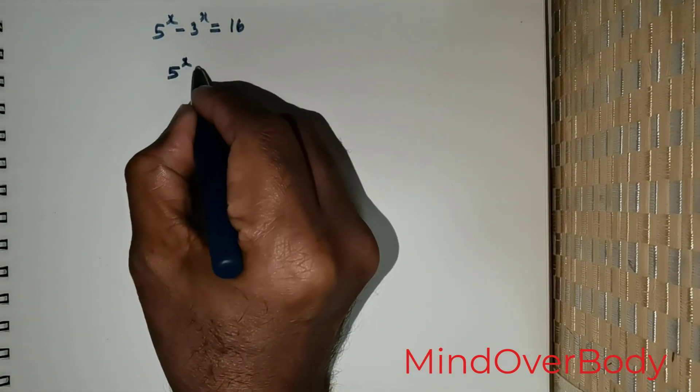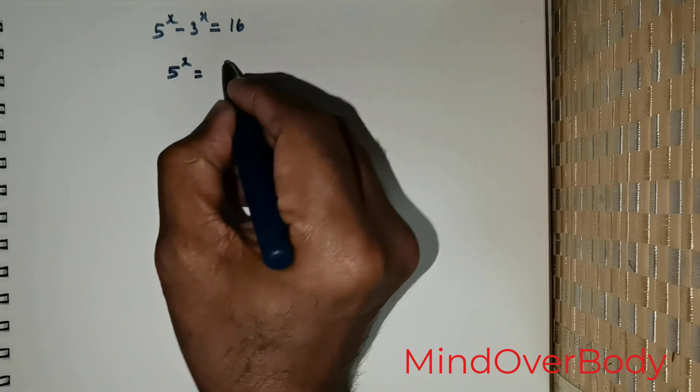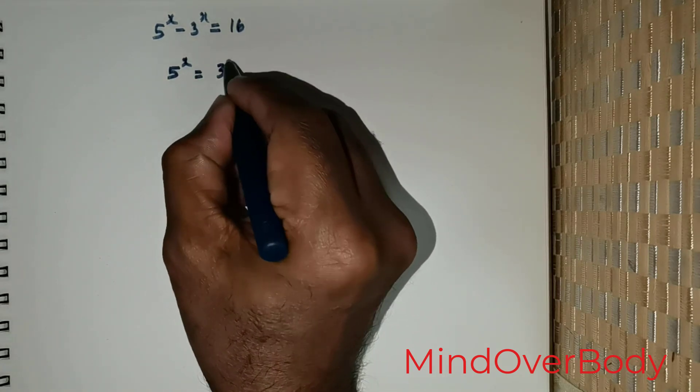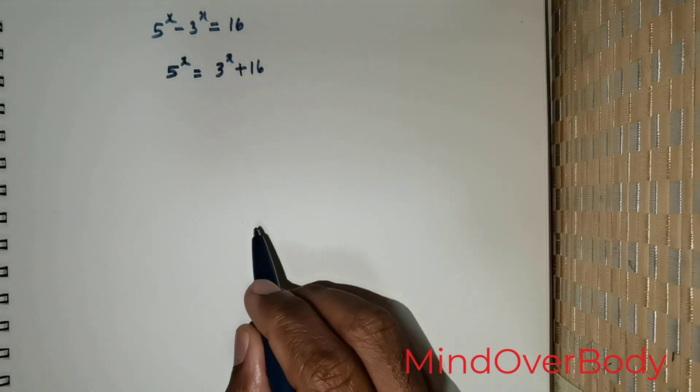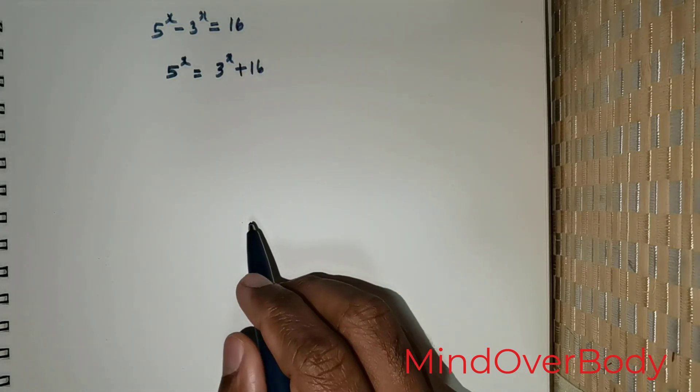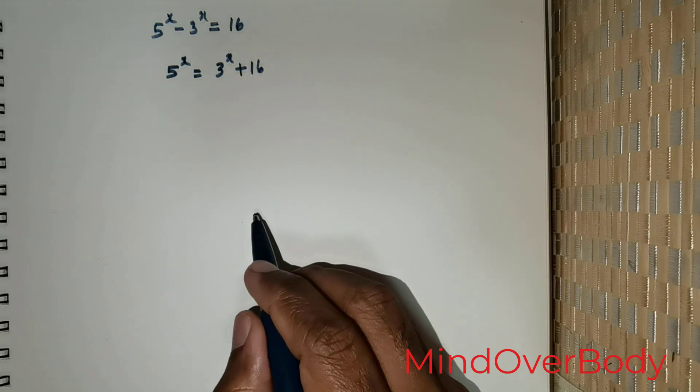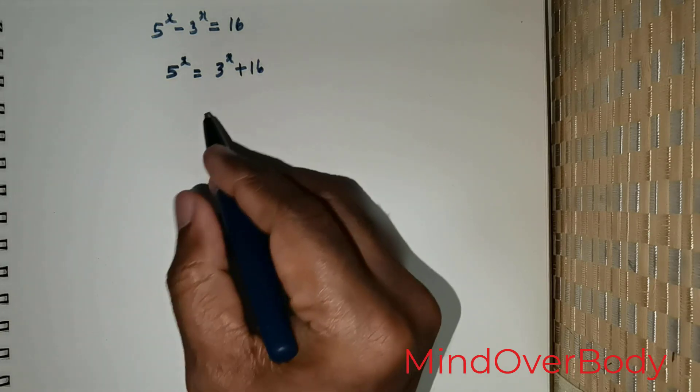I would like to rewrite this question as 5^x = 3^x + 16. I'm going to be showing you two ways by which this question can be solved. Now, for the first way...